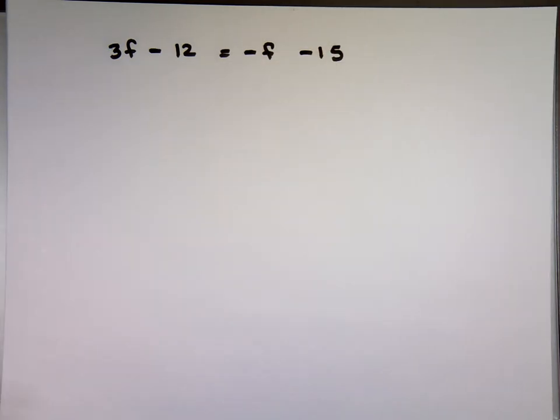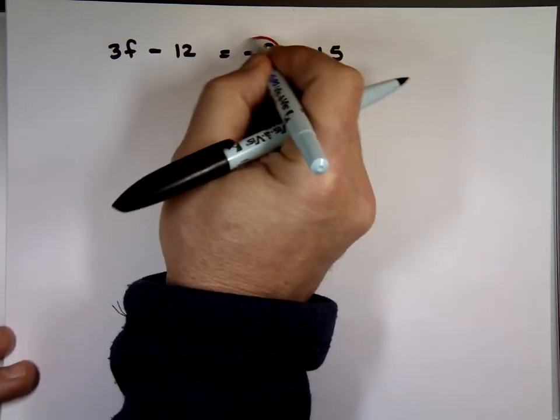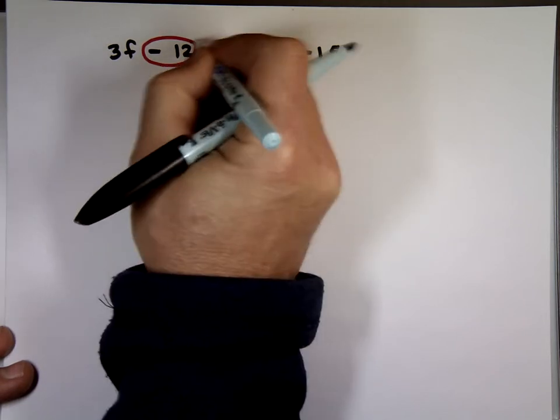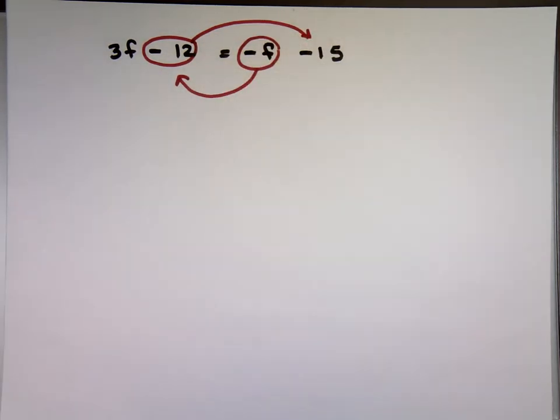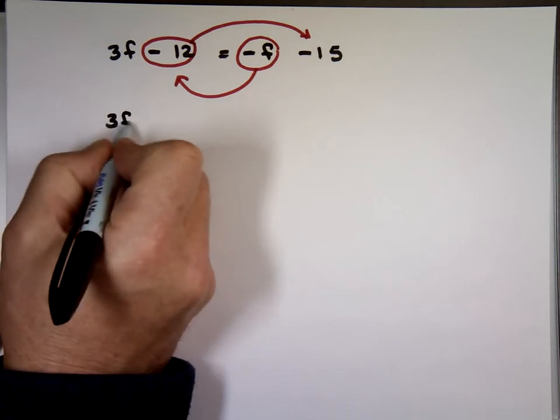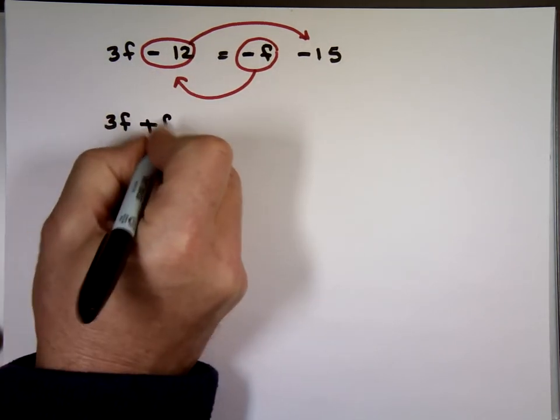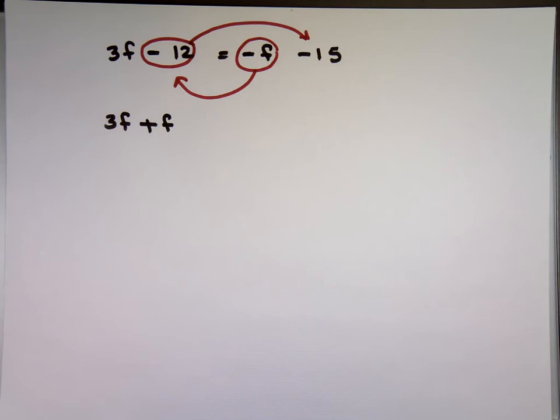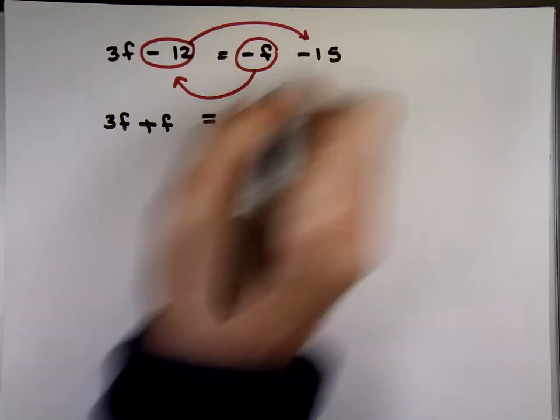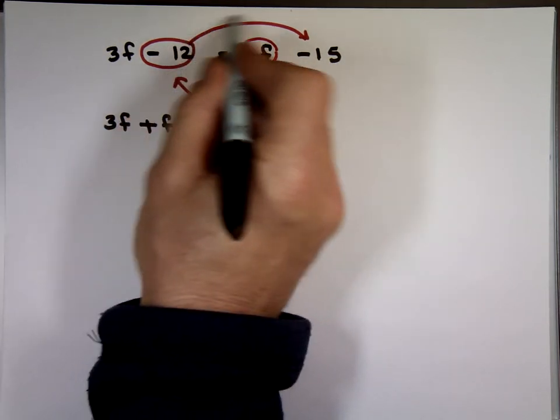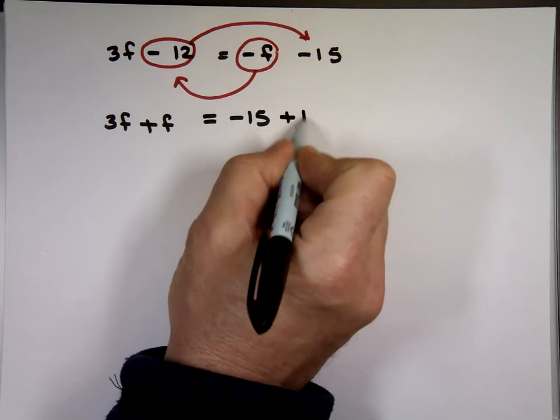3F minus 12 equals negative F minus 15. Again, I want all the Fs on one side. I want this F to come to this side, and I want all the numbers on the opposite side. Change side, change sign. So there's the 3F. It's not changing sides. But the minus F is coming from that side of the equation to this side. That becomes plus F. There's the negative 15. It's not changing side. The minus 12 is going from this side of the equation to that side becomes what? Positive 12.